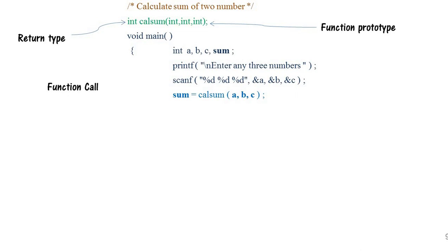After that you can see this statement: `sum = cal_sum(a, b, c)`. This statement is called function calling. The user inputs three numbers stored in `a`, `b`, `c`, and we call the function to perform the summation. The structure is: function name followed by the actual variables you want to pass, followed by a semicolon. Remember: in a function call there is a semicolon, and in a function prototype there is also a semicolon.